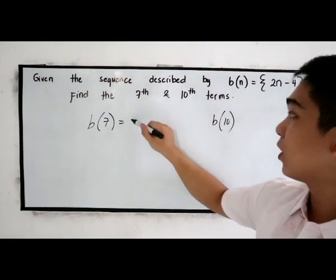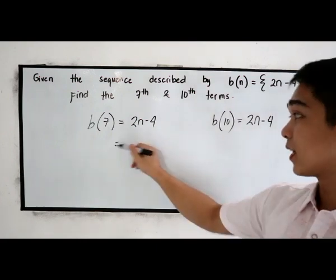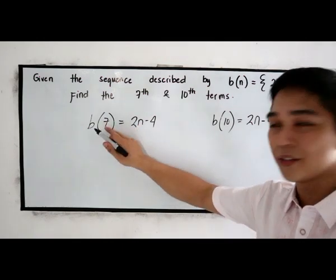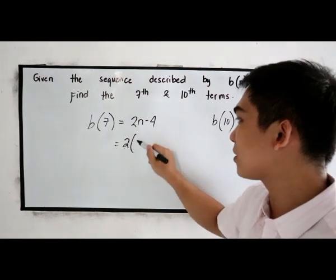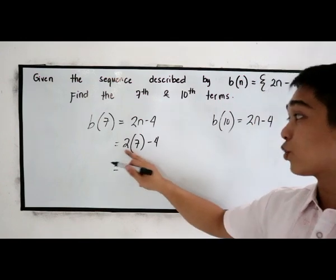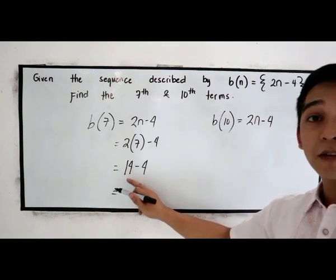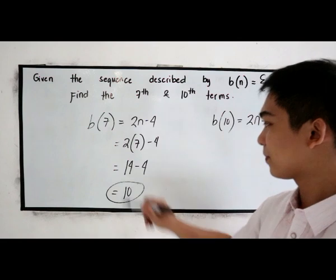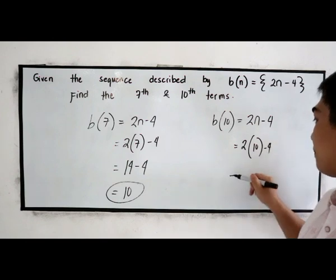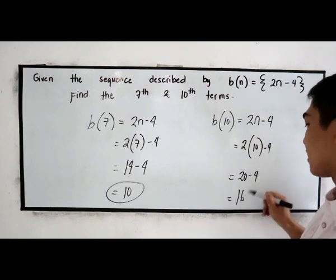So copy 2n minus 4, 2n minus 4. Next will be substitute n to our value. So 2 times 7, that is 14 minus 4. And 14 minus 4 is 10. Next, 2 times 10 minus 4. 2 times 10, that is 20 minus 4. And this is 16.